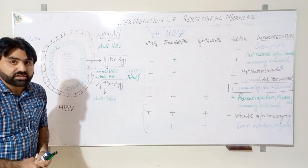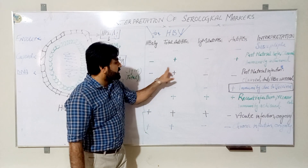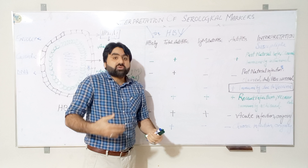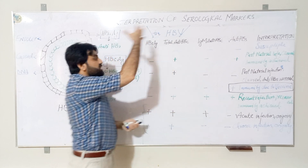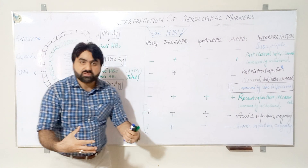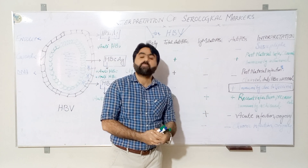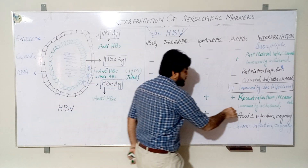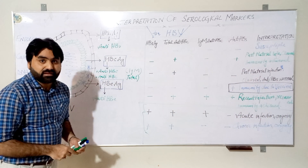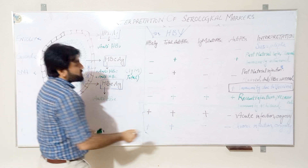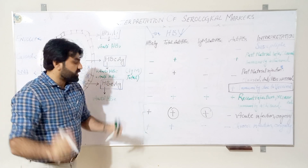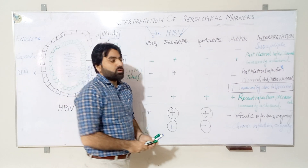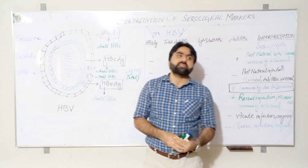The CDC also interprets that the presence of only total anti-HBc can indicate low-level chronic infection in addition to past natural infection. In summary, these two key rows are most important: HBsAg positive with IgM anti-HBc indicates acute infection, while HBsAg positive with IgM anti-HBc absent indicates chronic infection.